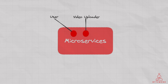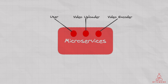The Video Uploader microservice would handle video uploads from the user. It would receive the video file, perform some basic validation and transcoding, and store the video in a storage service like S3. The Video Encoder microservice would handle transcoding of videos into different formats and resolutions for playback on different devices. It could use a service like AWS Elastic Transcoder for this purpose.